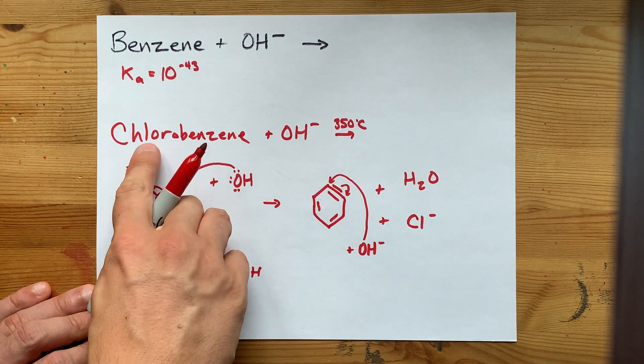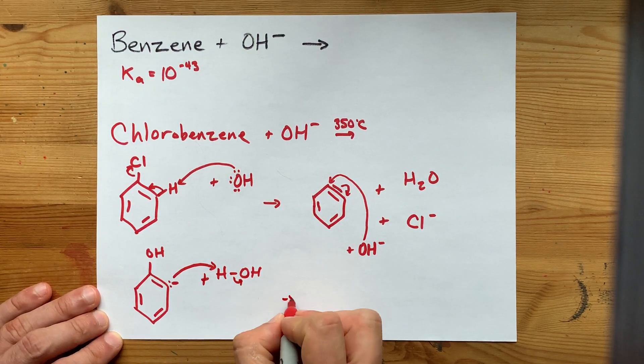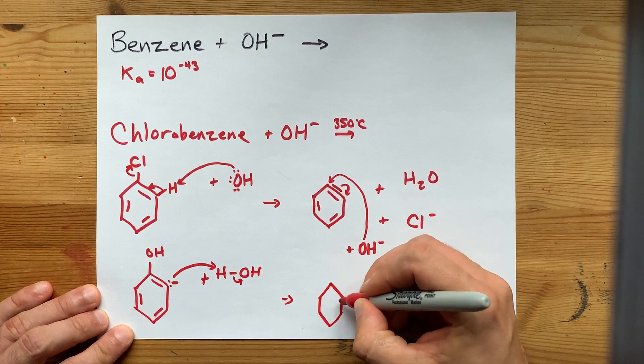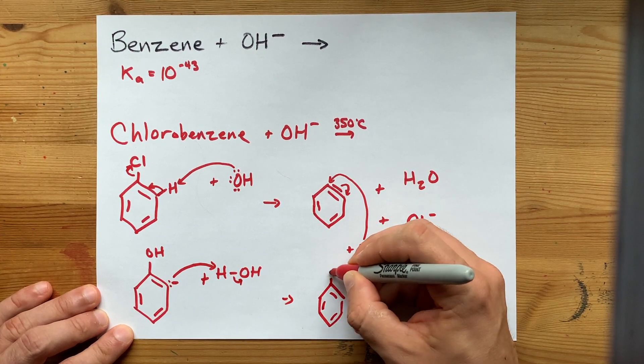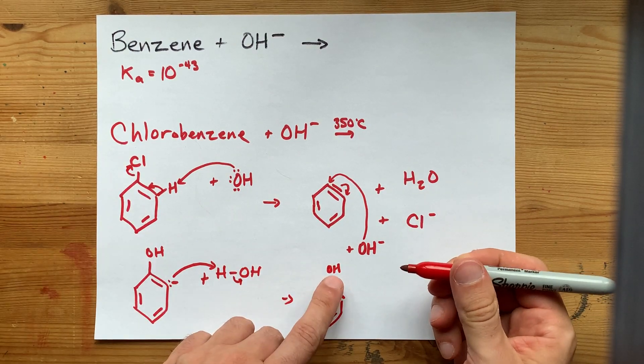After all, you're only replacing one chlorine with one OH. One of these was a catalyst, and you end up with your intact benzene ring with your alternating double bonds like you always had. But now, your chlorine has been replaced with OH.